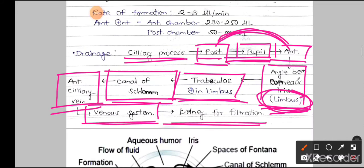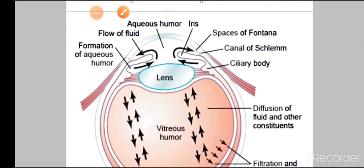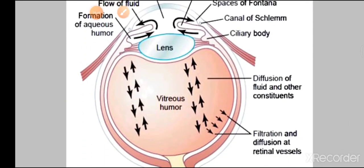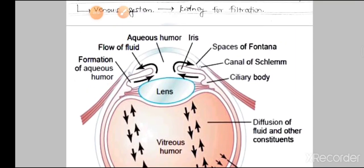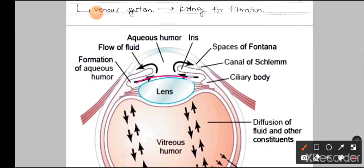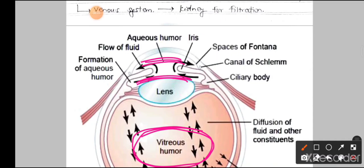Looking at the diagrams: there are two main chambers — the vitreous chamber and the aqueous chamber at the anterior side. The aqueous chamber is further divided into the posterior and anterior chambers. The posterior chamber is noticeably smaller than the anterior chamber, with a capacity of 230 to 250 microlitres for the anterior and only 50 to 60 microlitres for the posterior.